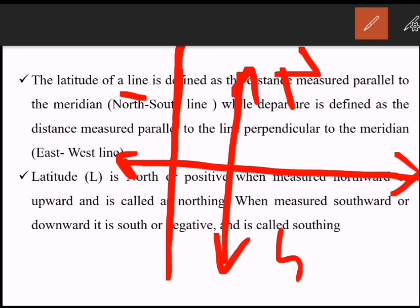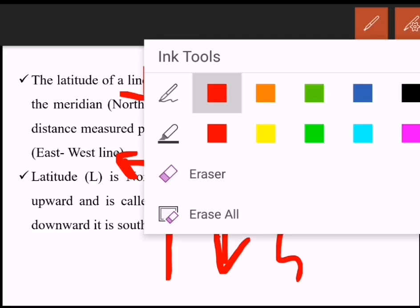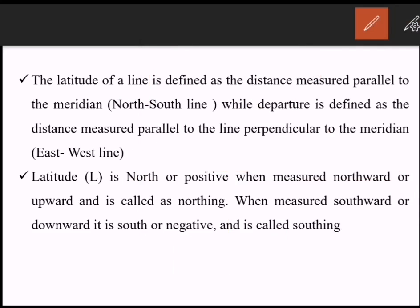Latitude can be denoted as L and departure can be denoted as D. Latitude L is north or positive when measured northward or upward, and is called northing. When measured southward or downward, it is south or negative and is called southing.